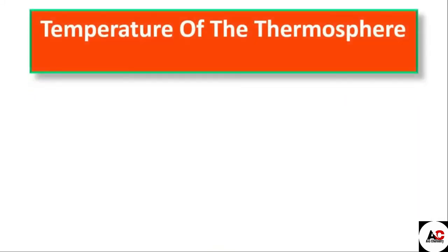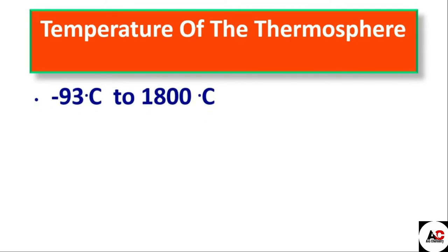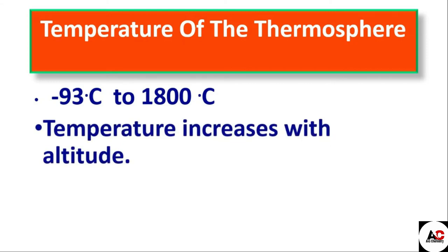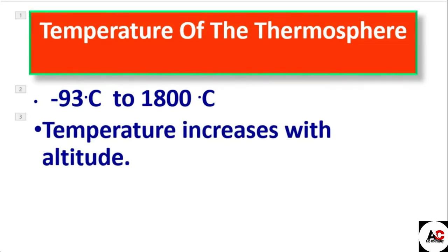The temperature of the thermosphere ranges from minus 93 degrees Celsius to 1800 degrees Celsius, which shows that temperature increases with altitude. At the mesopause — the boundary between the thermosphere and mesosphere — the temperature is minus 93 degrees Celsius, and it increases all the way up to 1800 degrees Celsius.